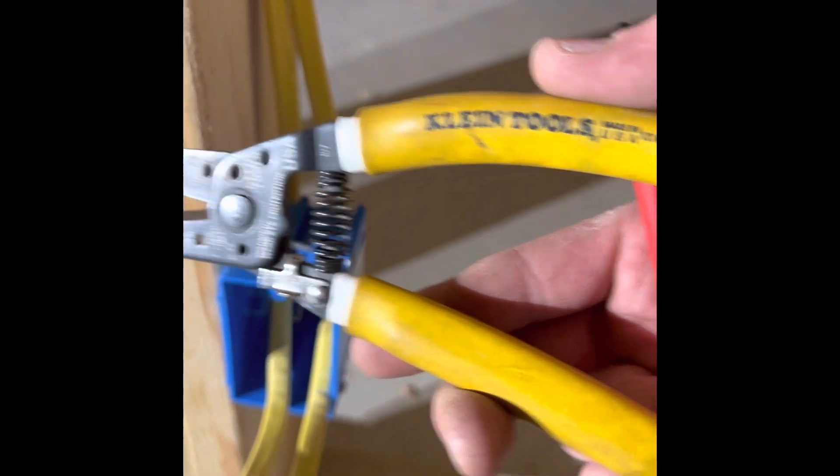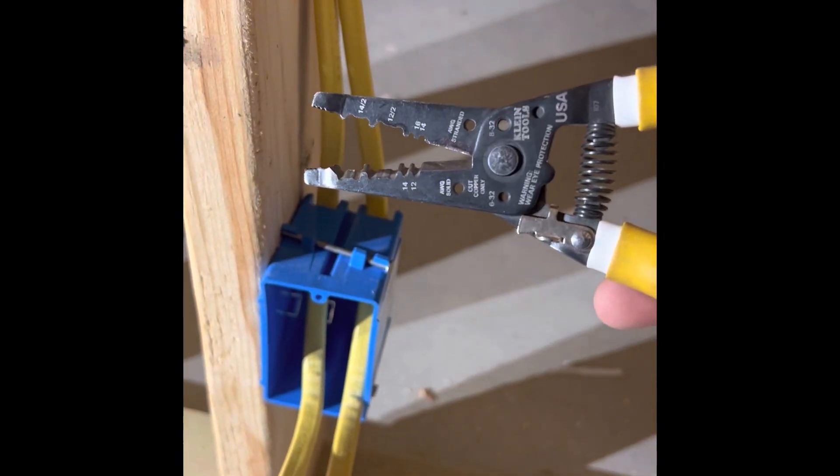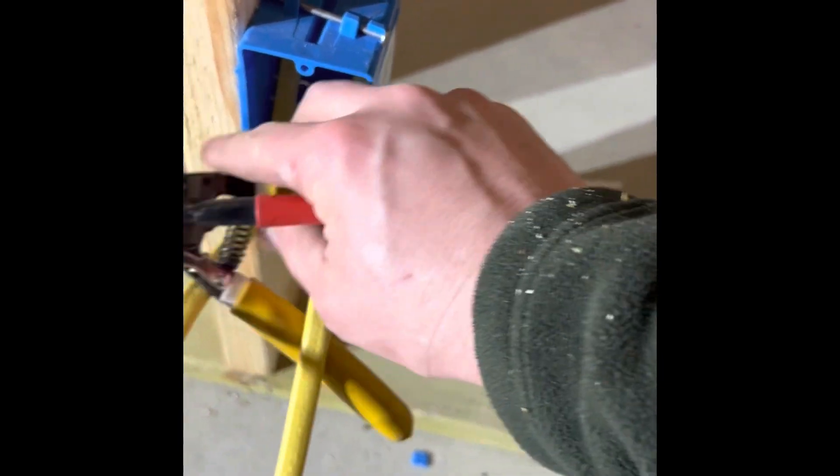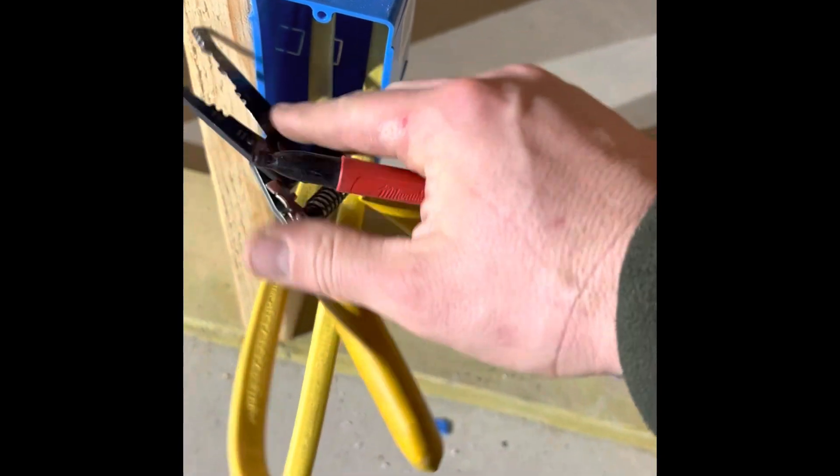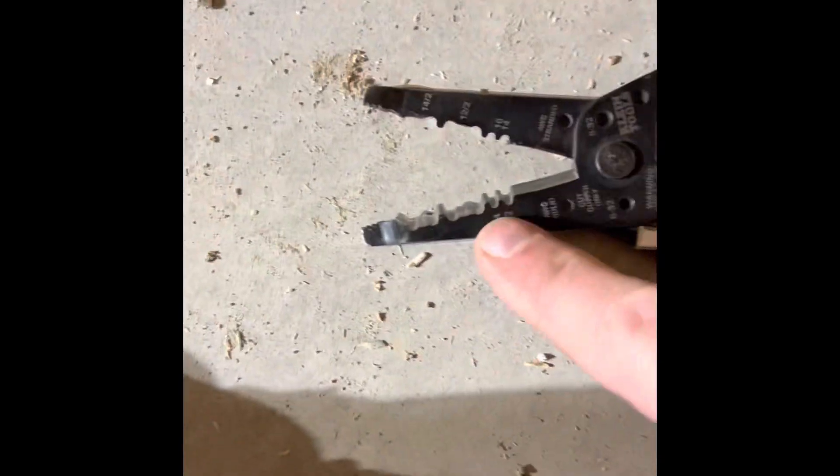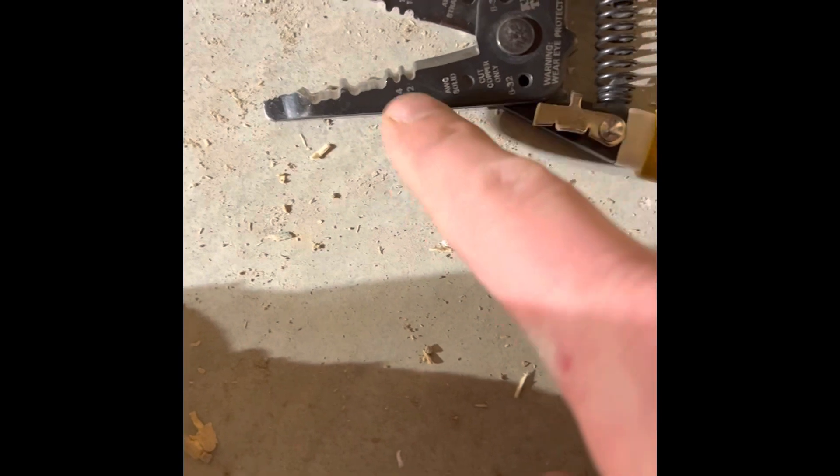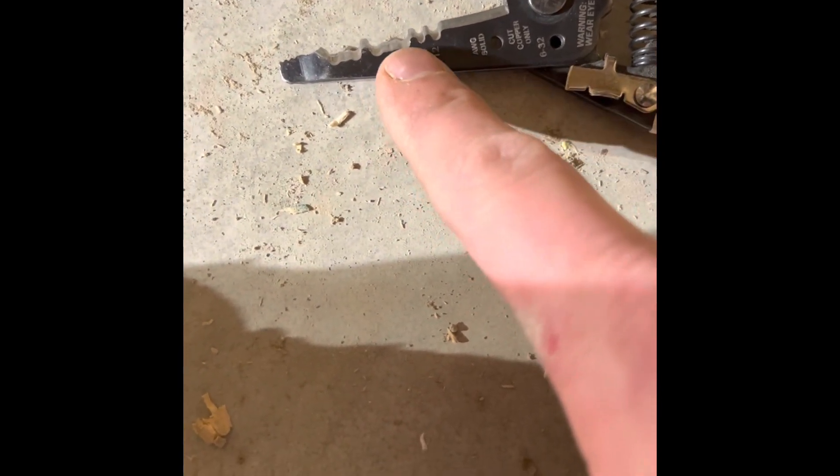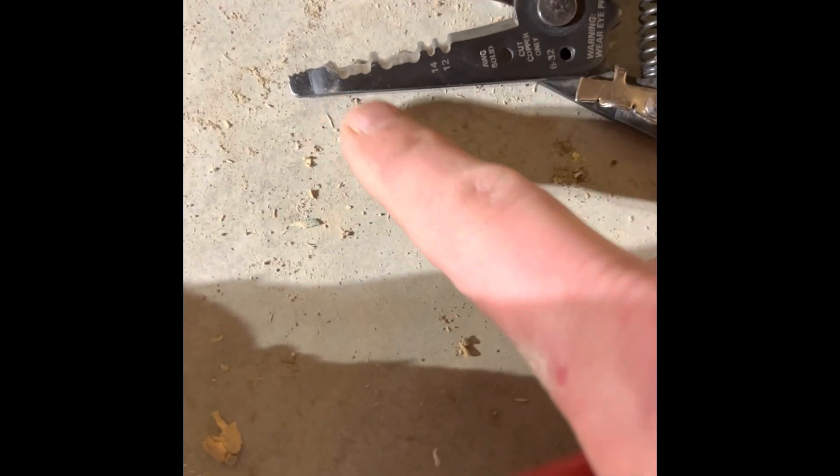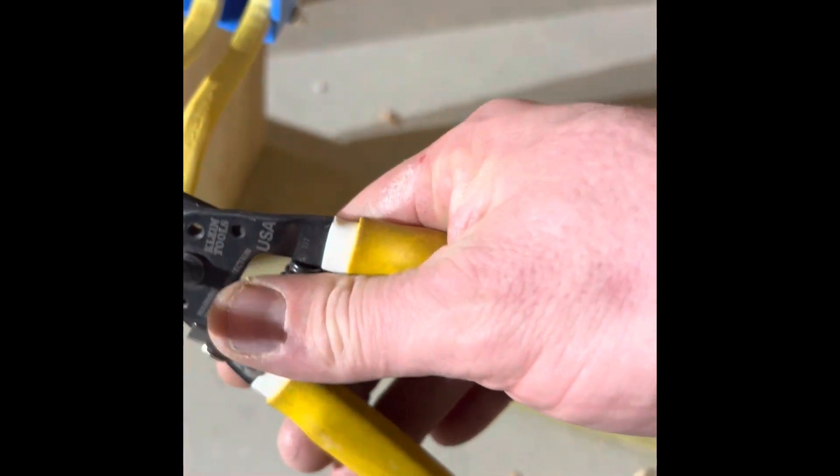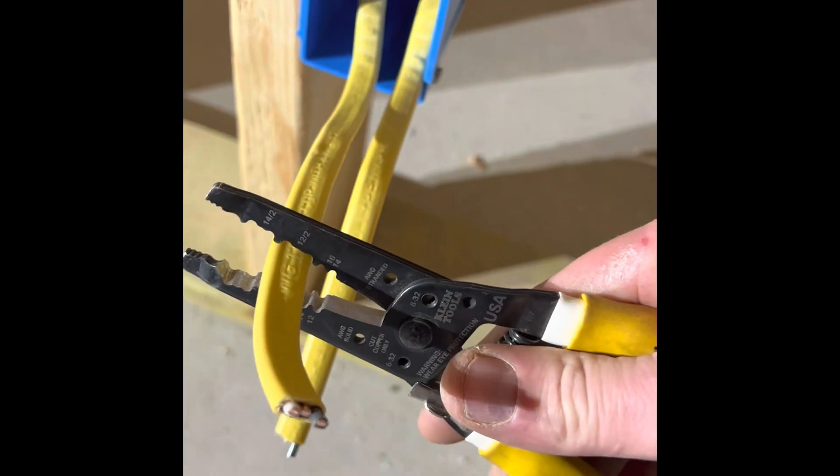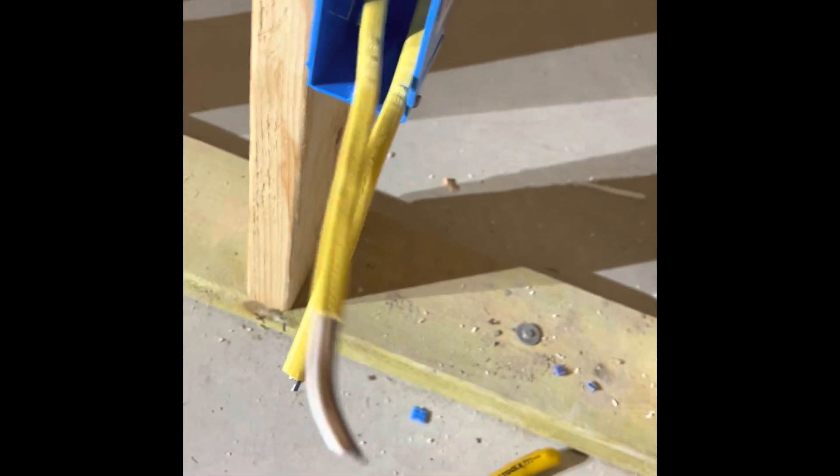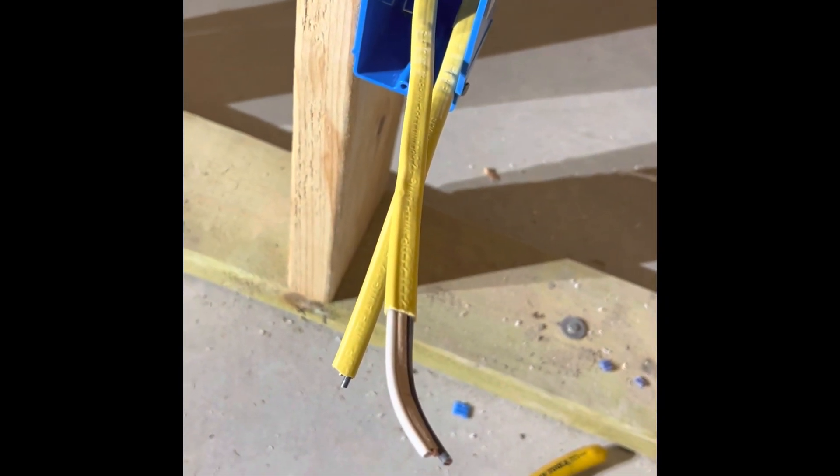This is a Klein tool, but there's some other ones out there. You can see these little ridges here. The larger ones for 12-2, and then this one's for 14-2. So if you kind of put that on the wire like this and just dig into it, you can pull this sheathing right off.